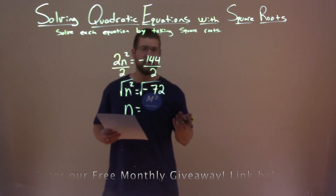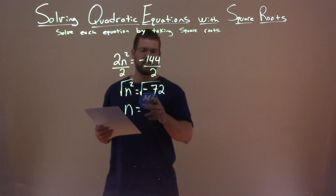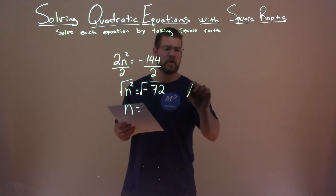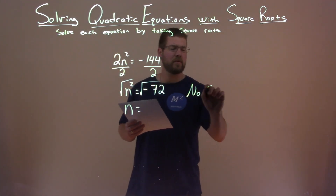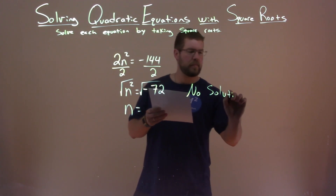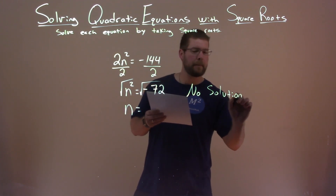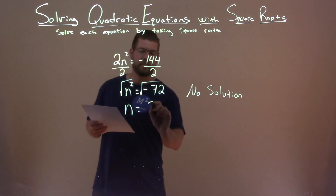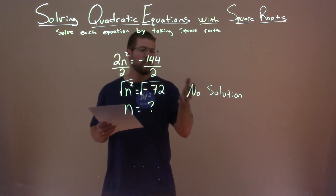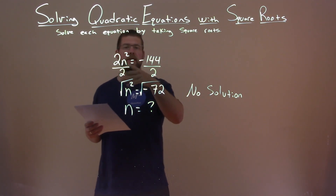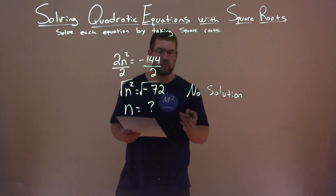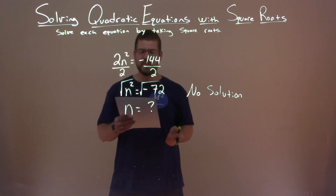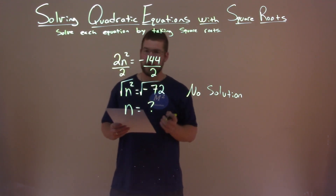We can't take the square root of a negative number — that's imaginary. So in this case, we're actually stuck. This is really a no solution. There is no solution for n that we can plug in to make this equation true. So no solution is our final answer.